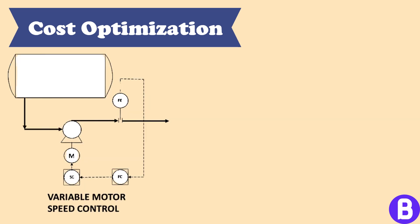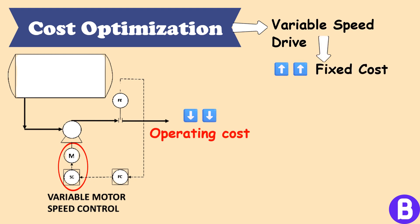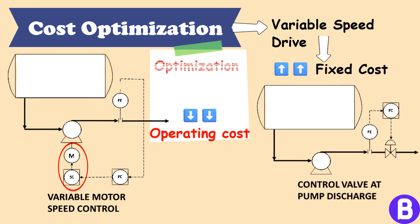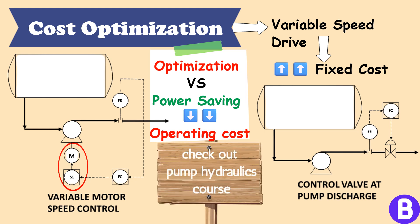Here comes another method which shall be through controlling the speed of the pump motor. This means that a variable speed drive should be considered for the pump motor, which has a higher fixed cost. So an optimization here is needed by comparing the power savings when using a variable frequency drive motor against its initial cost and whether it's worth it or not. You can check out the pump hydraulics course for more information on how the pump operation works.